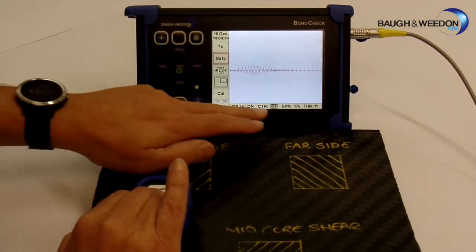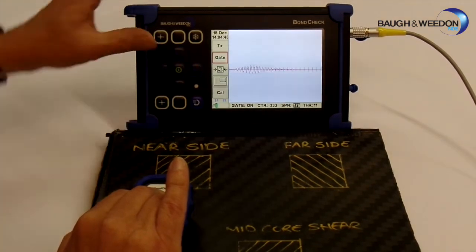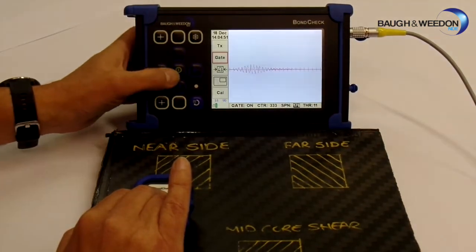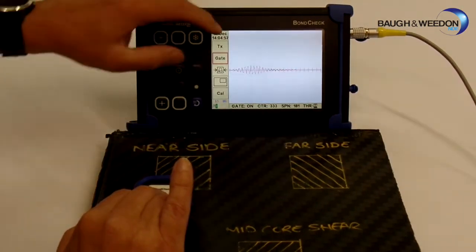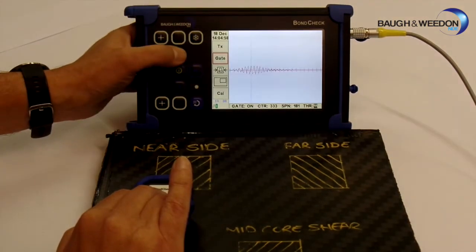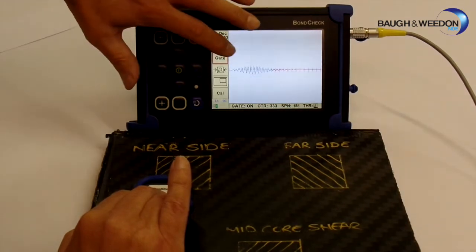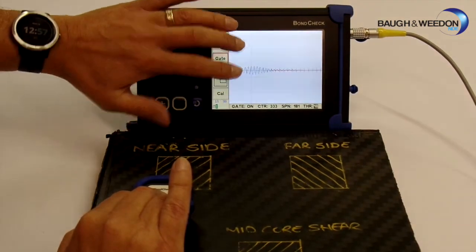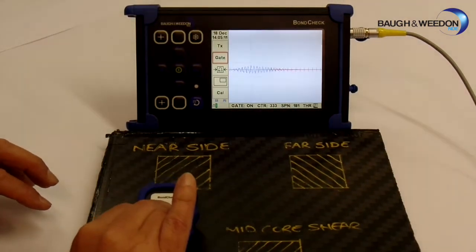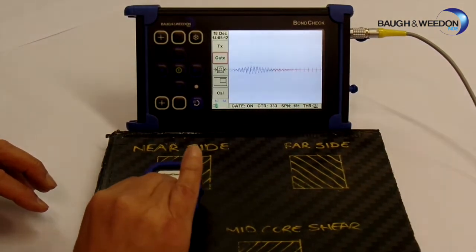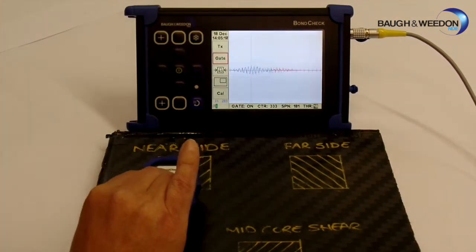So what we now can do is change the span, which is the distance along the waveform, so we can increase or decrease that as required. Or we can go and change the threshold, which is obviously the height of the gates. So if we put it there, if we put it in this area away from the waveform, so it is above it, we can see that the waveform is now blue. So if we scan, nothing is happening. If we go to the defect area, it has broken the gate and the signal has turned red.